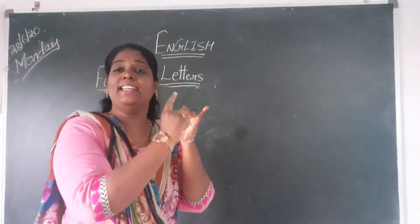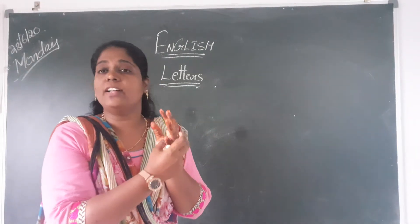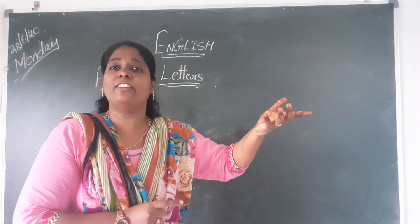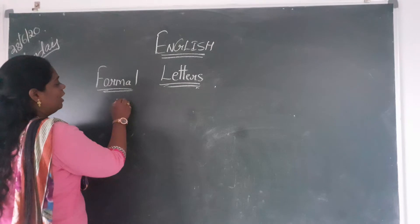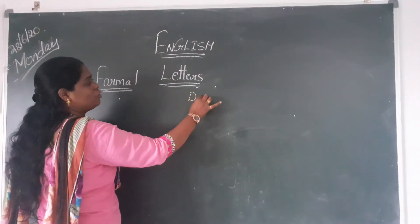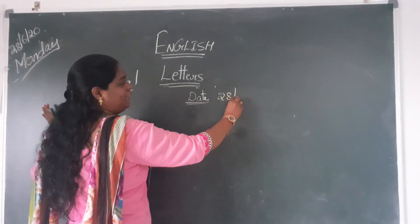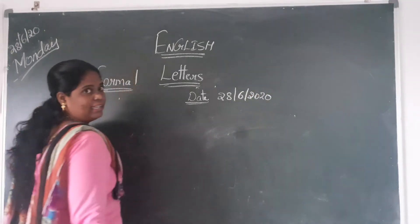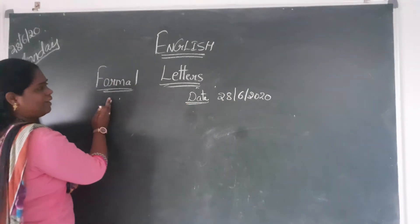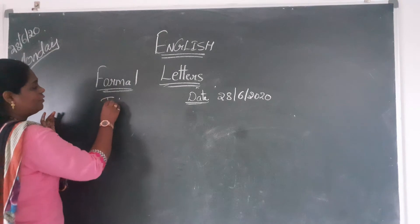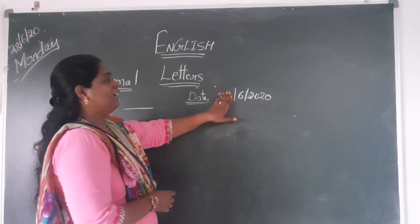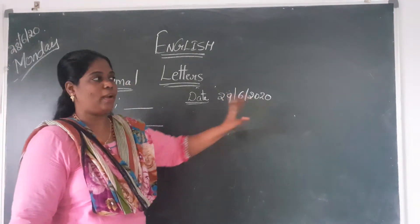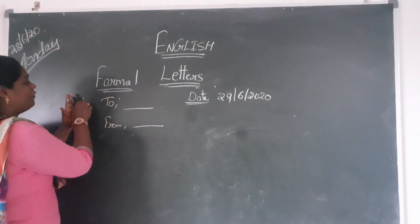The first thing is we should write the sender's address and the date. The sender's address means the person to whom we are writing, and next the receiver's address. In formal letters, you have to write the date at the right-hand side. Today's date is 29/6/2020. Coming to the left-hand side, you write the 'To' address and the 'From' address. This is the first step.